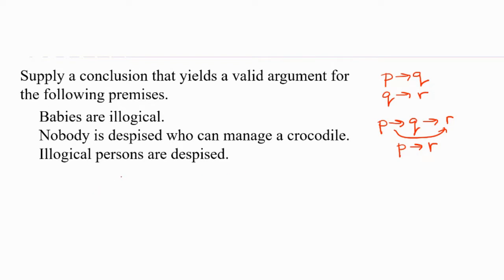So here we go. Babies are illogical. Nobody is despised who can manage a crocodile. Illogical persons are despised. Very strange, right? These are the facts we're assuming to be true. These are the premises, and we're going to see what conclusion we could draw.